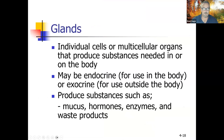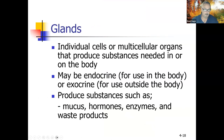Glands are individual cells or multicellular organs that produce substances needed in or on the body. Some glands produce sweat and oil on the surface; most produce materials to go into your blood. They can be endocrine for use in the body or exocrine for on the outside of the body, and they produce substances such as mucus, hormones, enzymes, and waste products like sweat.